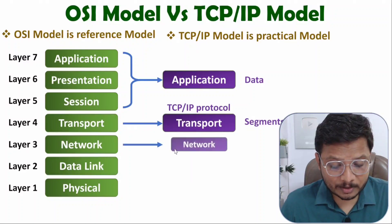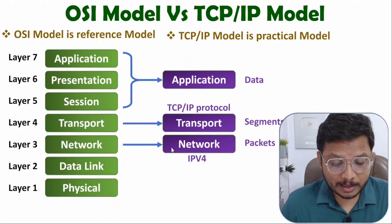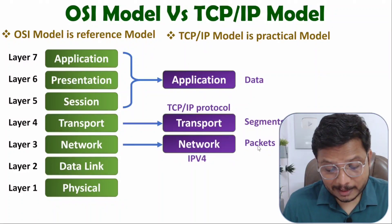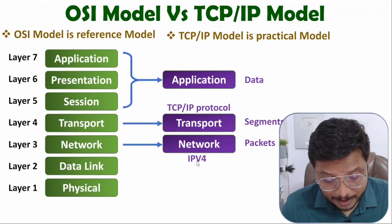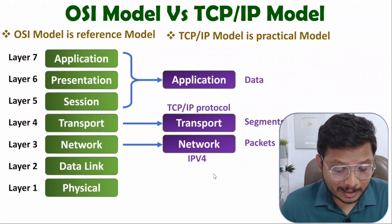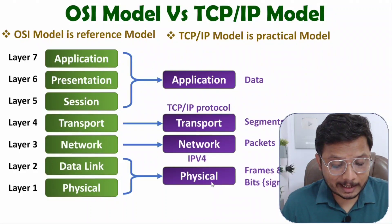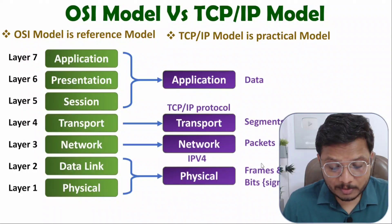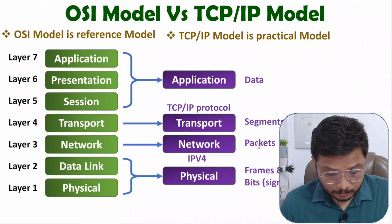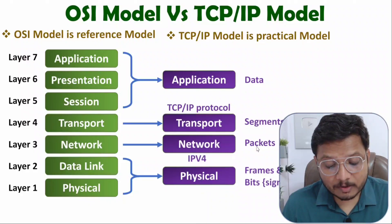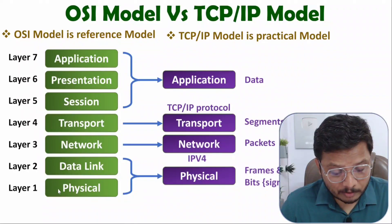The next layer in TCP/IP is the network layer, same as OSI's network layer, where IPv4 is the protocol used for logical addressing. Segments are converted into packets: a packet equals segment plus source IP address plus destination IP address. The last layer in TCP/IP is a combination of data link layer and physical layer, referred to as the physical layer. In data link, packets are converted into frames: frame means packet plus MAC address of source and destination plus tail bits.